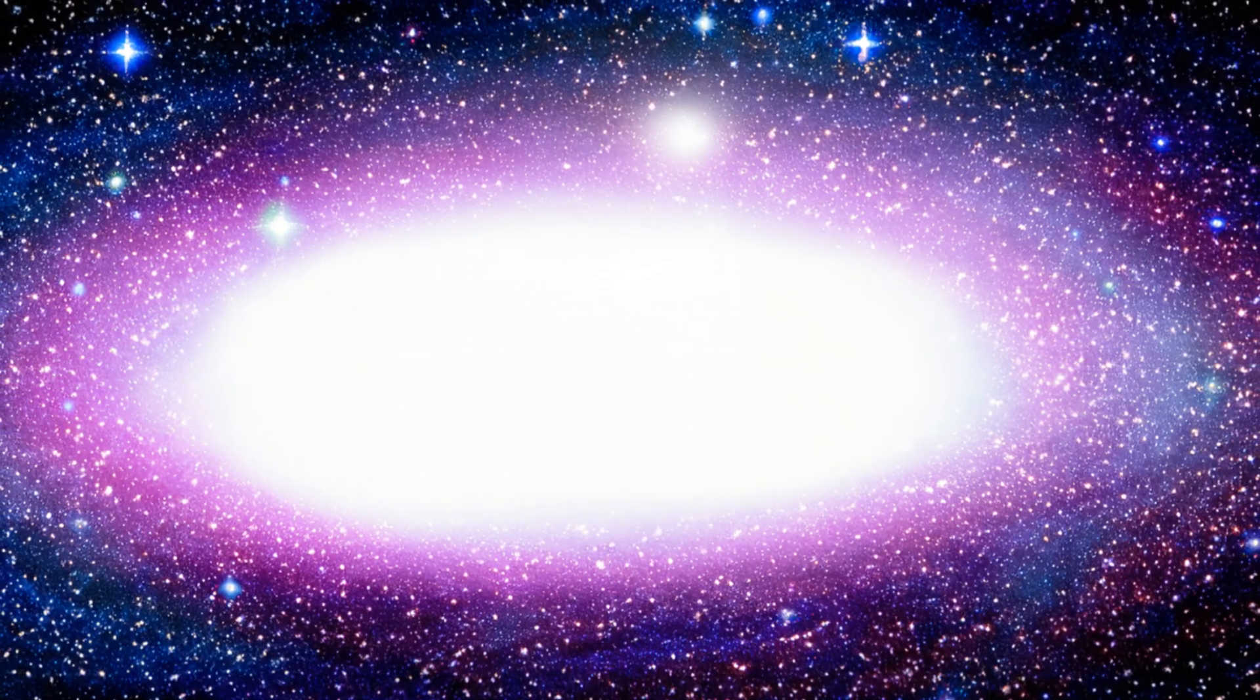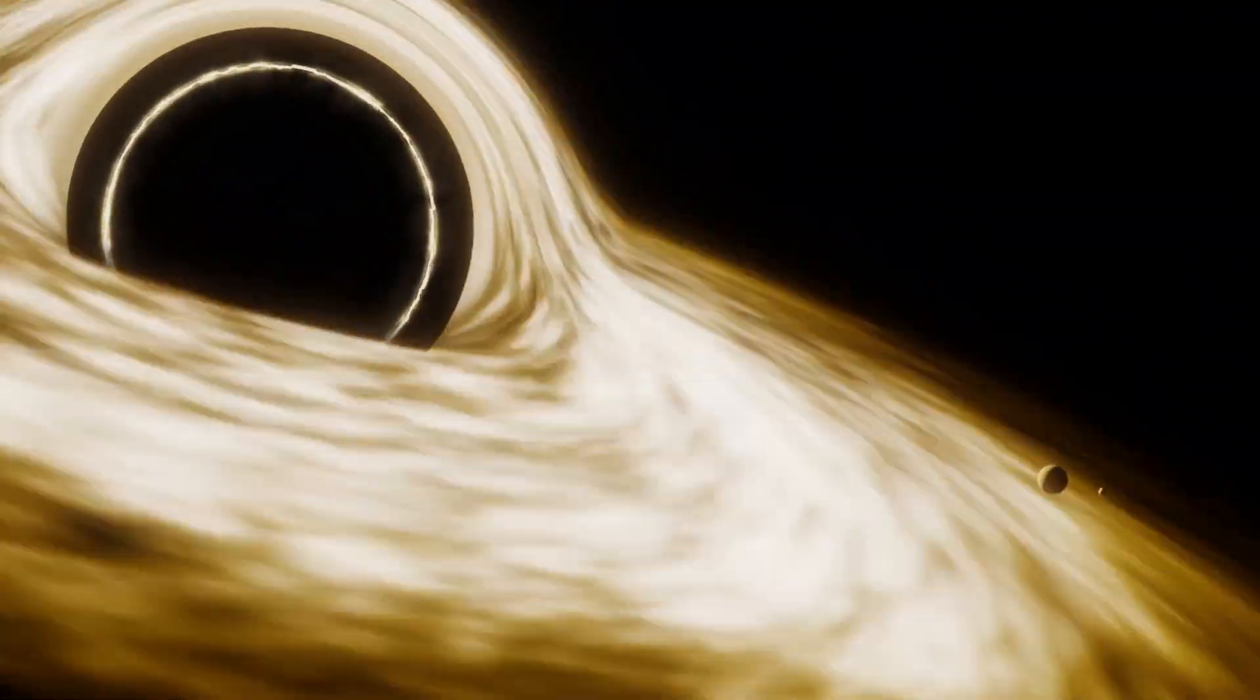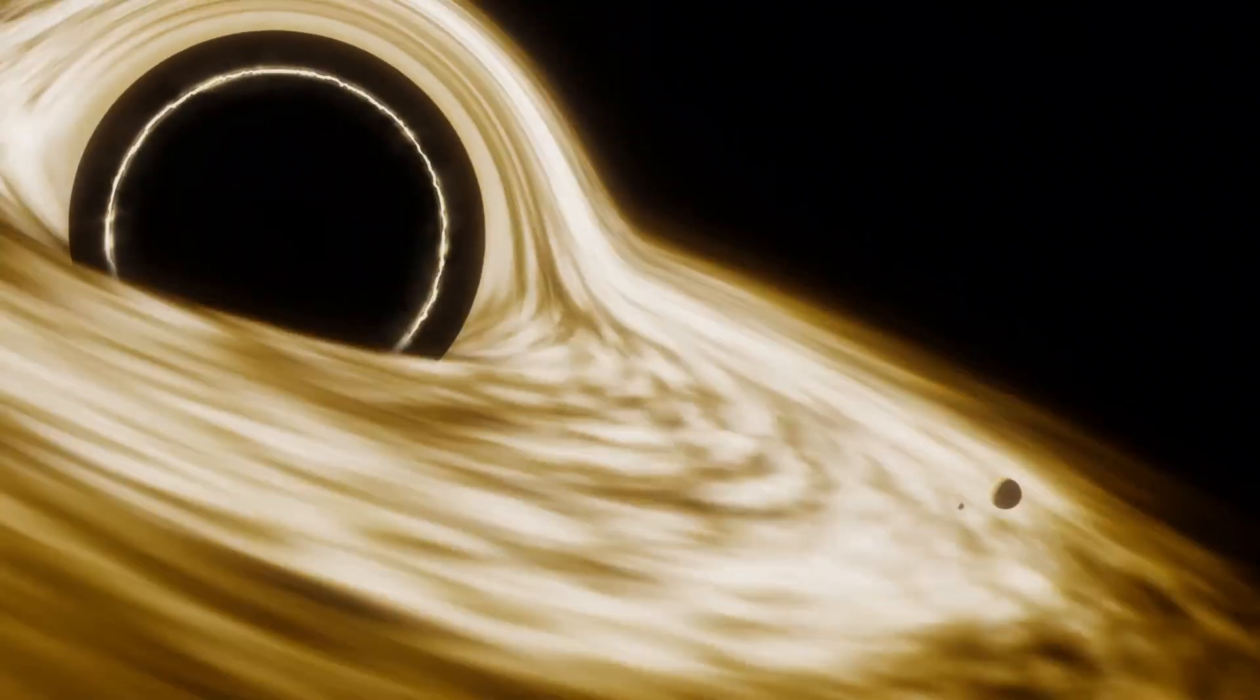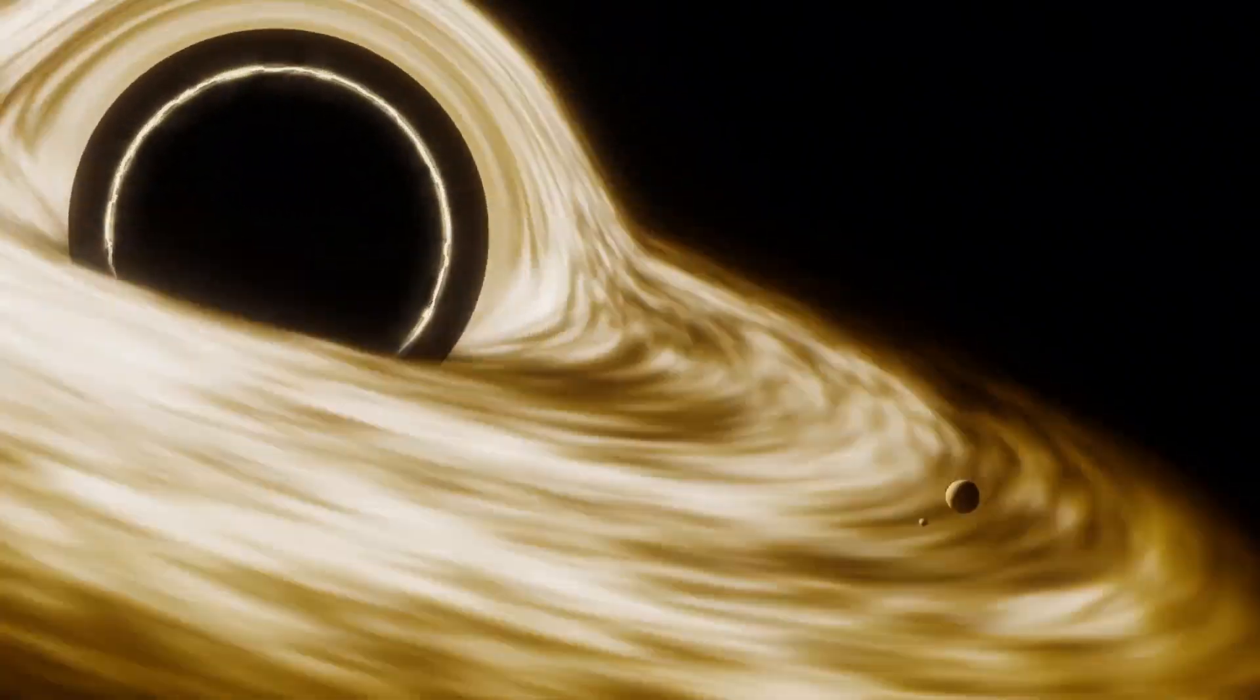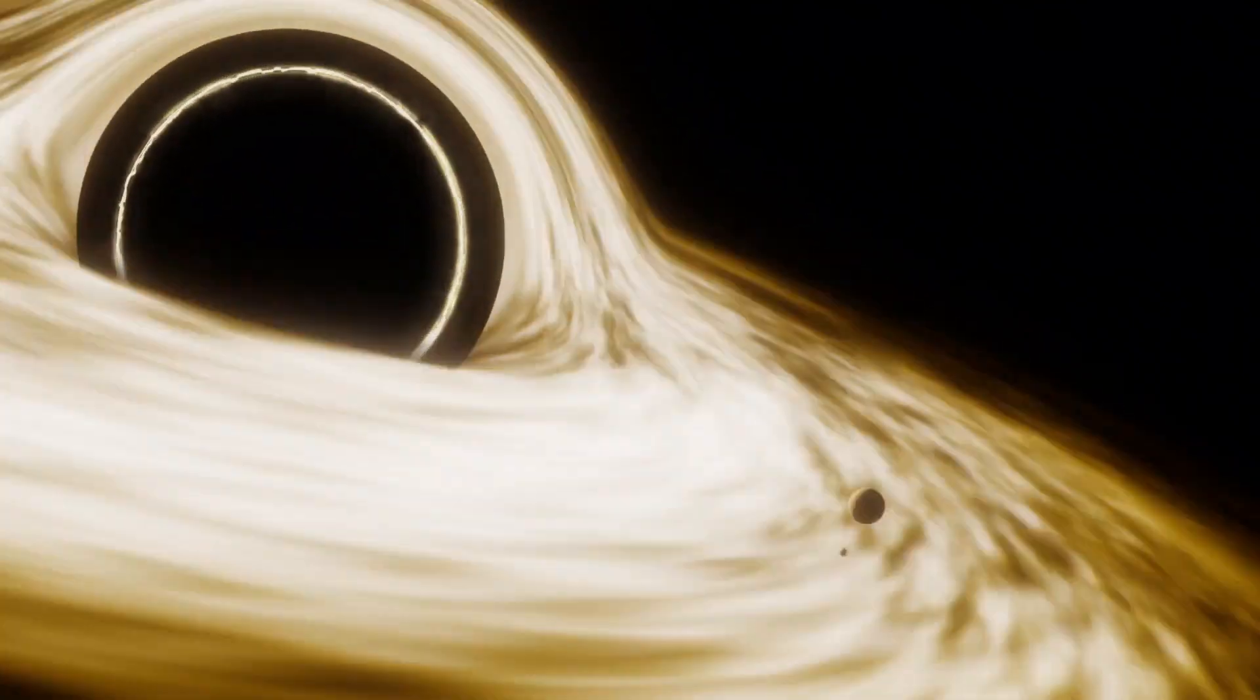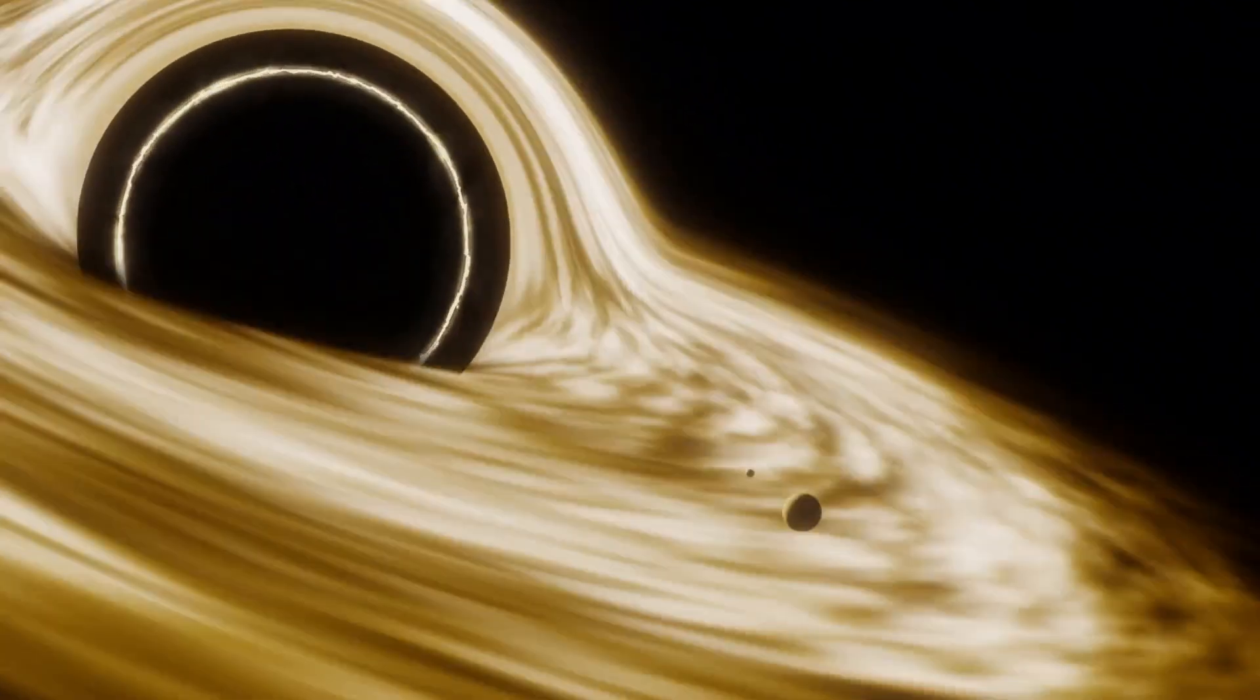For instance, the black hole GRO J1655-40, which is about 5.4 times more massive than the sun, has a radius of only 16 kilometers. Yes, just 16 kilometers. Imagine fitting five or six suns into such a tiny space. When you cram such a huge mass into such a small volume, the fabric of space-time is curved to absurd degrees.